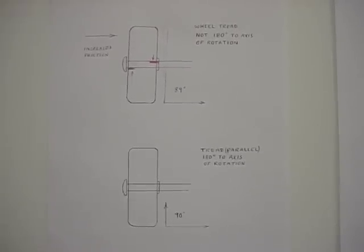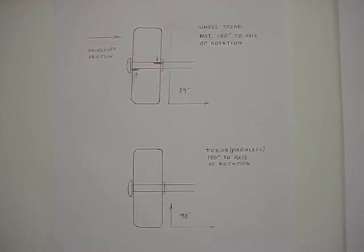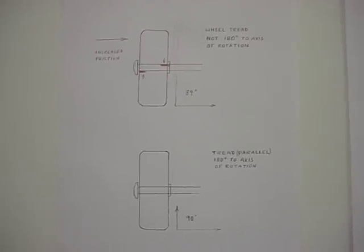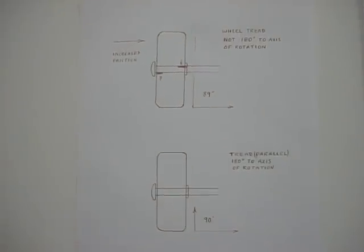An important principle for maintaining a very balanced and true wheel is that the tread be parallel to the axis of rotation of the wheel, in other words, 180 degrees to the axis of rotation.